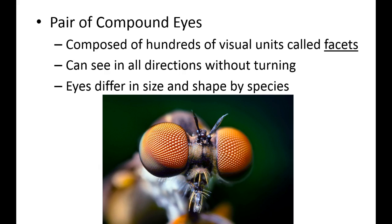You should know what a compound eye is — the individual units are called facets, and they're found on mature insects. Immature insects don't have compound eyes yet; they develop them as they progress through instars. Adult insects also have three simple light-sensing structures called ocelli, located as three little dots on the head. You'll likely need to label these on a picture — know how many adult insects typically have and what they do.